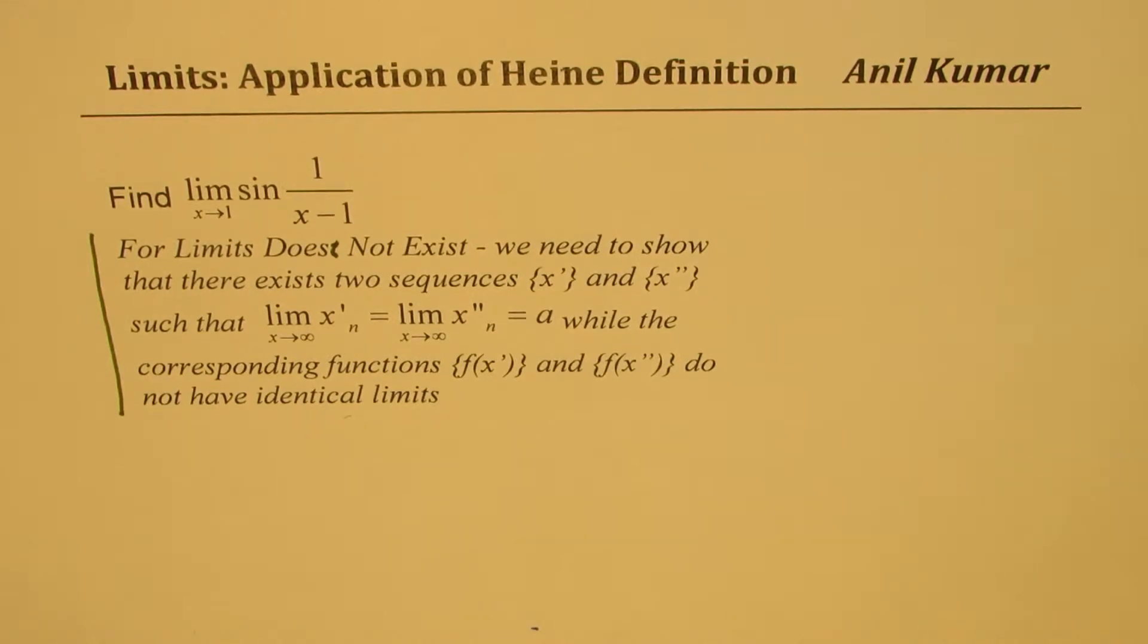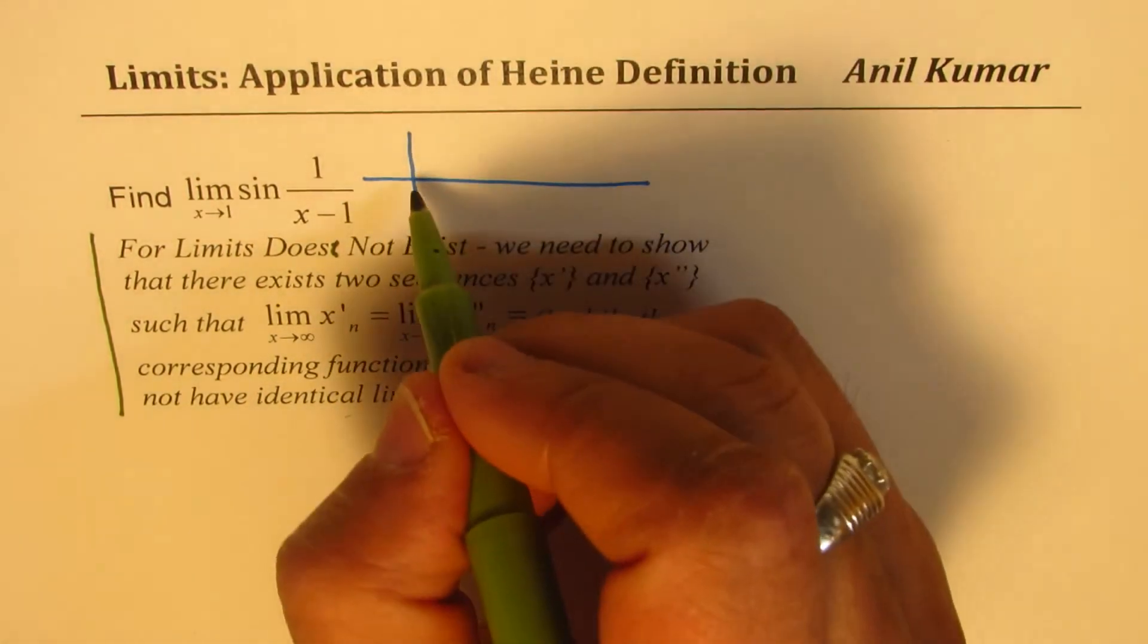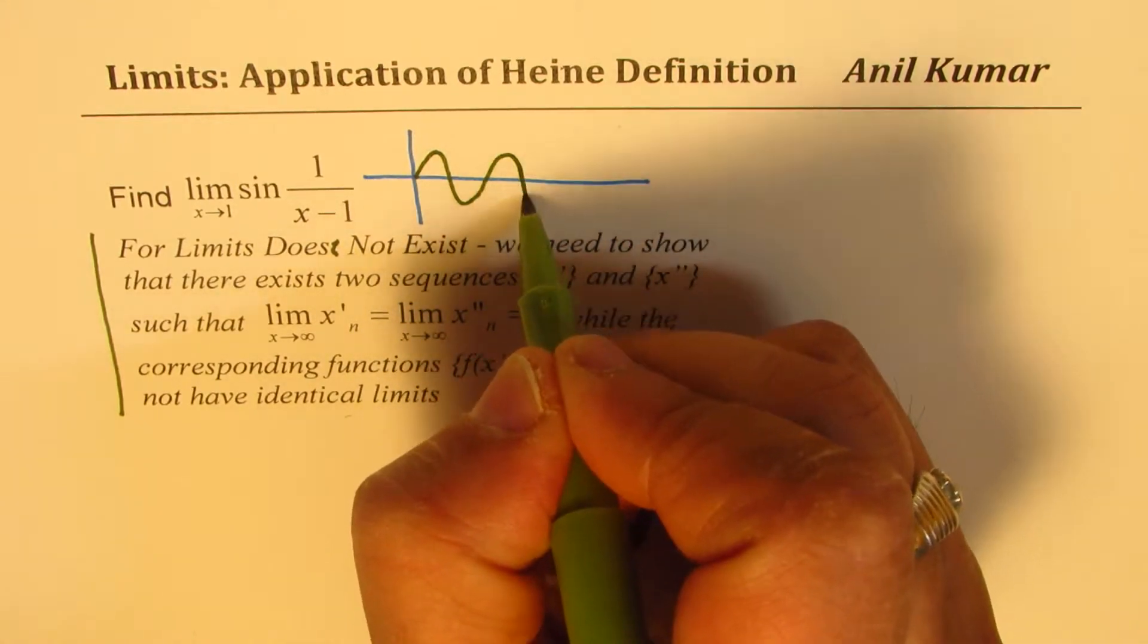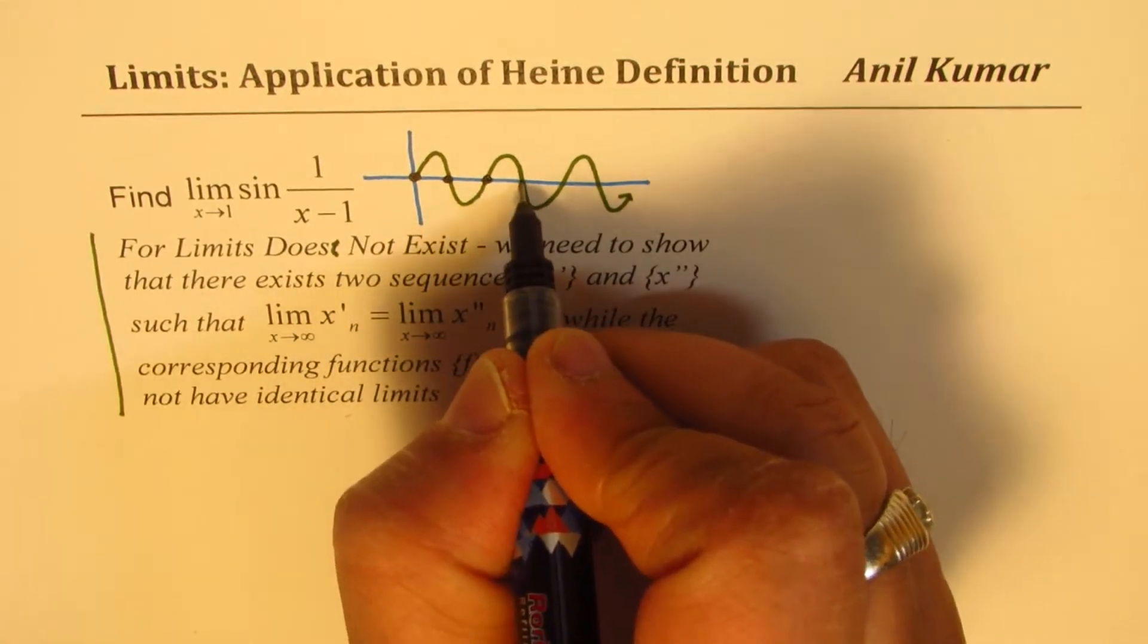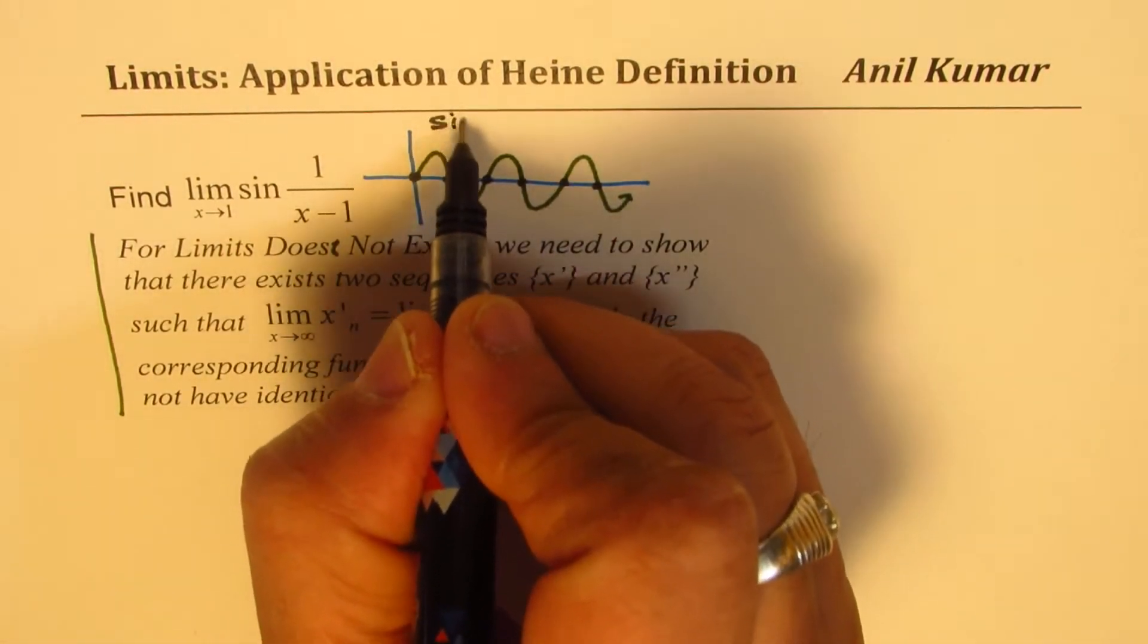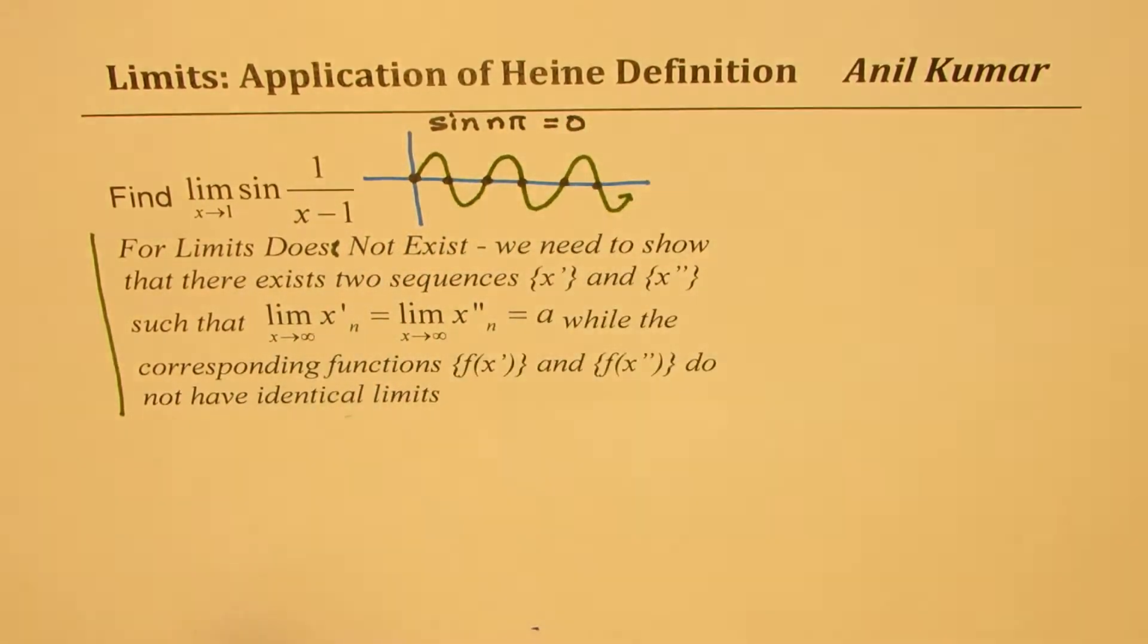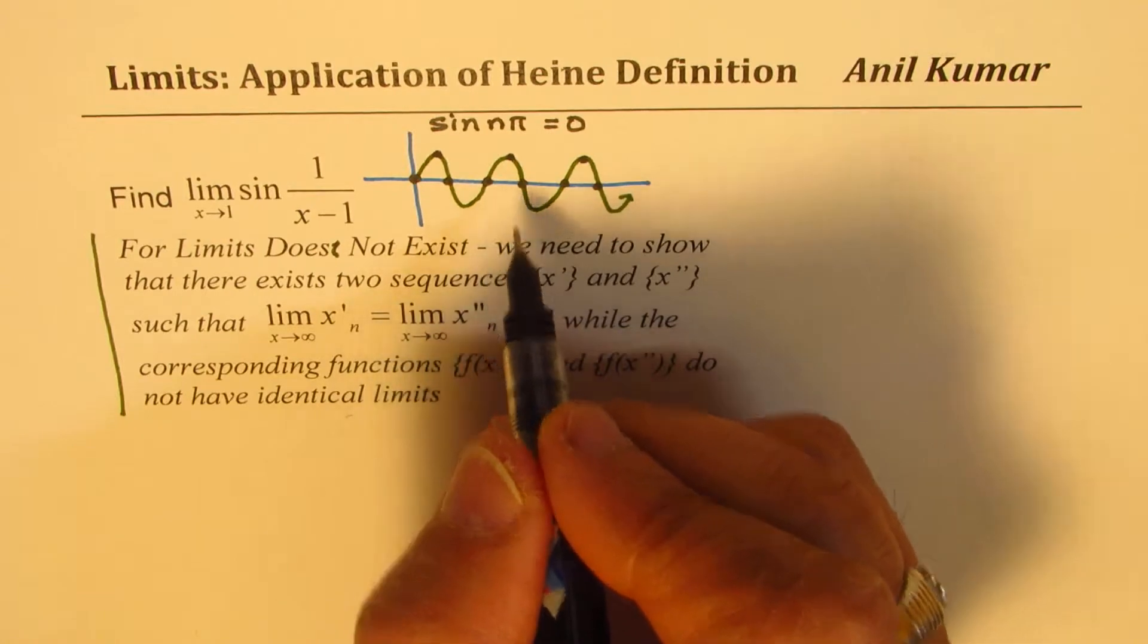Now how do we use it to prove that the limit of sine 1 over x minus 1 does not exist when x is approaching 1? So we have to look for conditions when the value of sine is very clearly known to us. Let's say this is a sine graph. We know that whenever the value of x is n pi, sine is 0. So that is one thing which is known to us: sine of n pi is equal to 0. The other thing which we also know is that it is 1 at pi by 2 and repeated 2n pi.